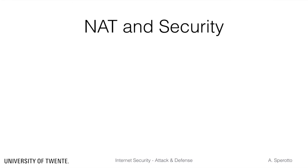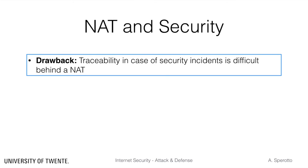Thinking about forensics, a NAT can also interfere with finding the origin of malicious traffic. Once a network is behind a NAT, traceability of security incidents becomes a problem. Although one might rely on logging of NAT mappings, in practice this is not done, meaning that it is quite difficult to identify the host originating malicious traffic.